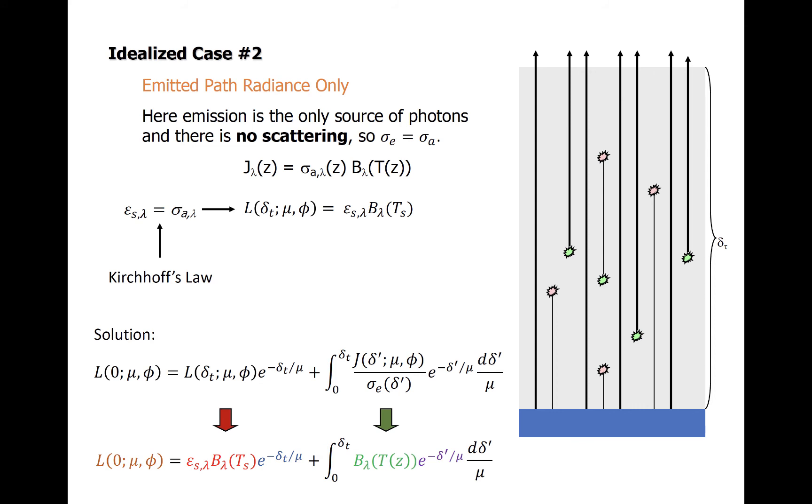Consider the next sample case. Here we will allow emission, but not scattering, to be a source of radiation along the path. This is primarily the case for infrared emissions detected by satellites. Now J is not 0. Instead, it is proportional to the Planck radiance multiplied by the emissivity of the surface. The Planck radiance is determined by the temperature of the surface.